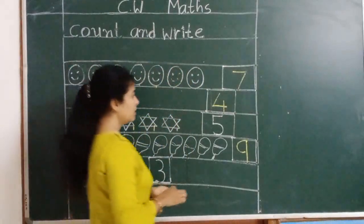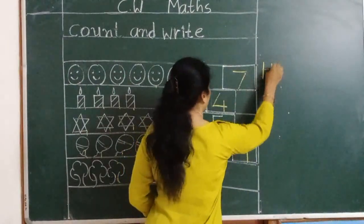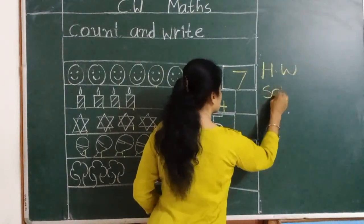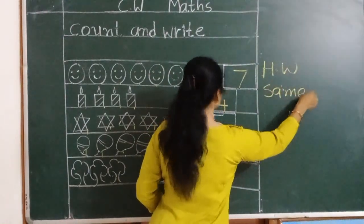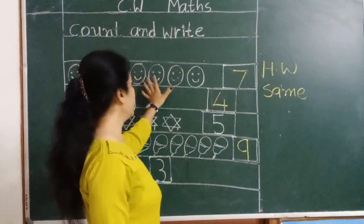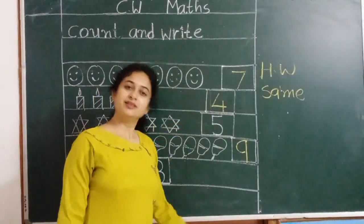So we should write practice at home as H.W. H.W. same. That means next page you write same as C.W. Okay. Understood? Thank you.